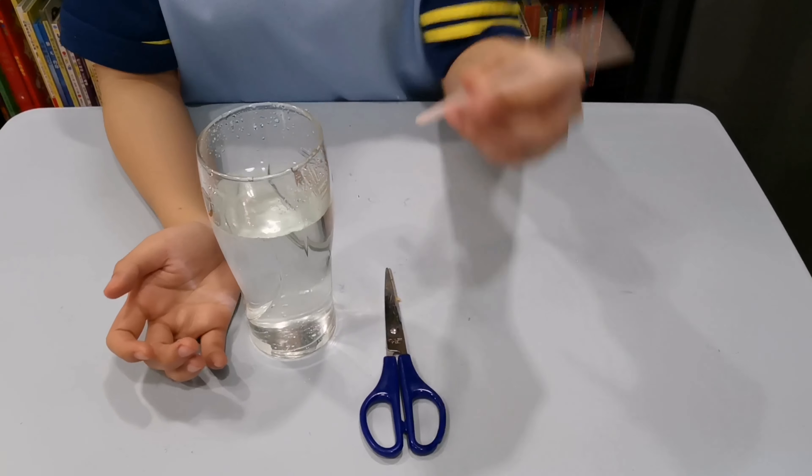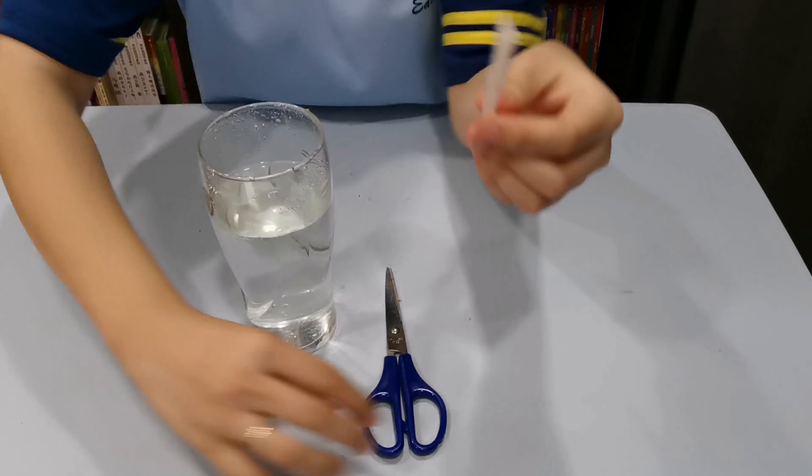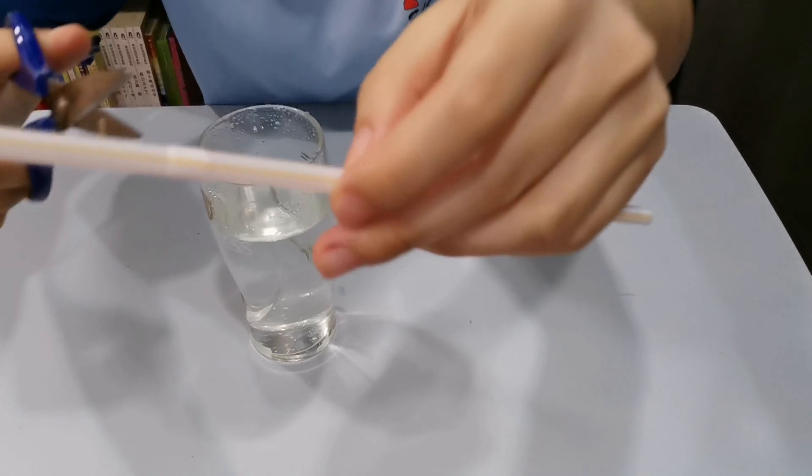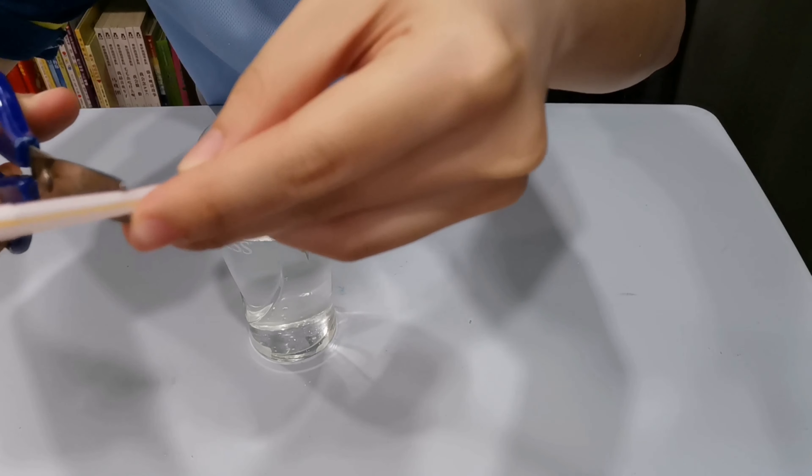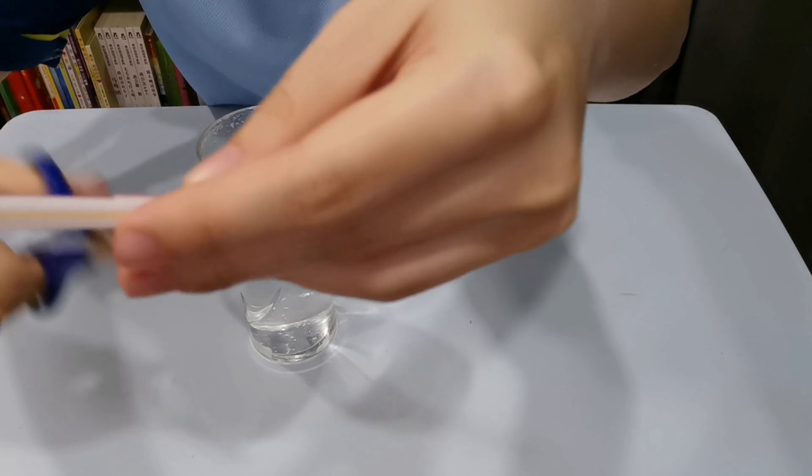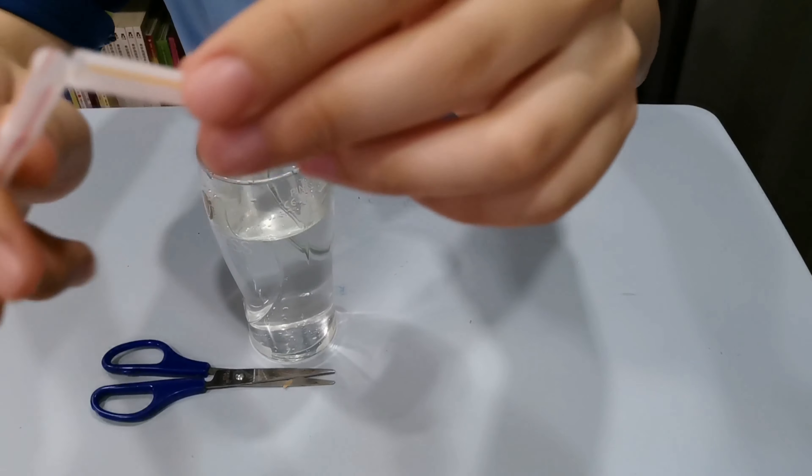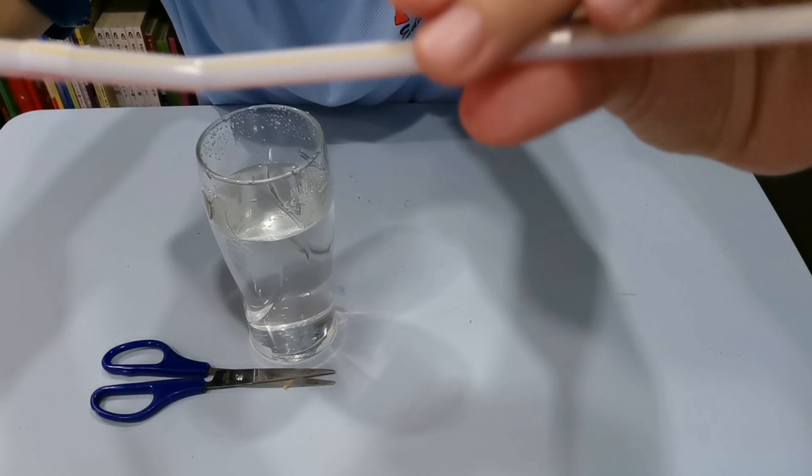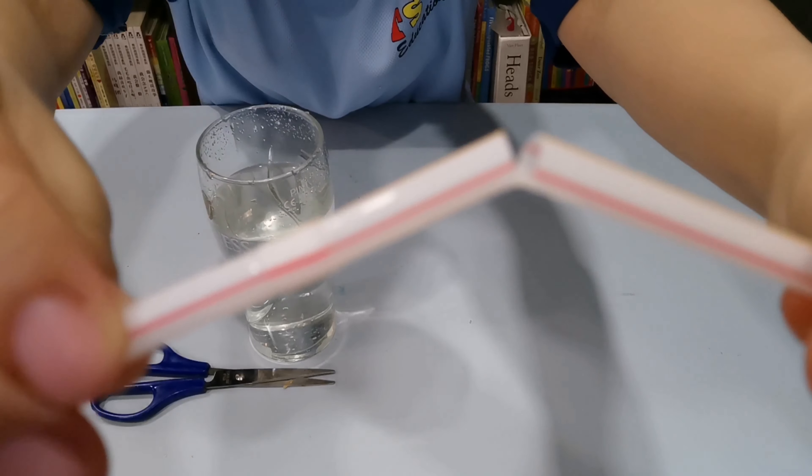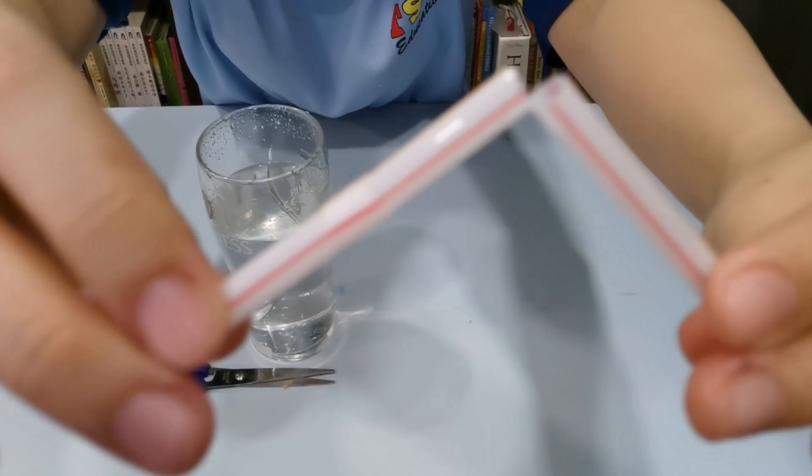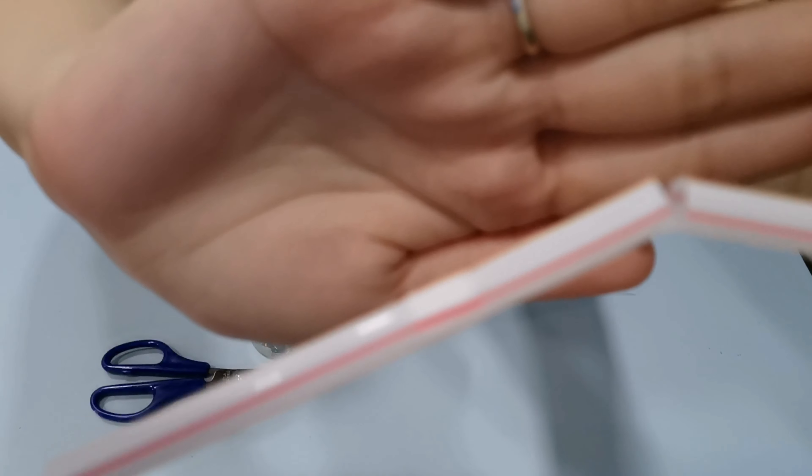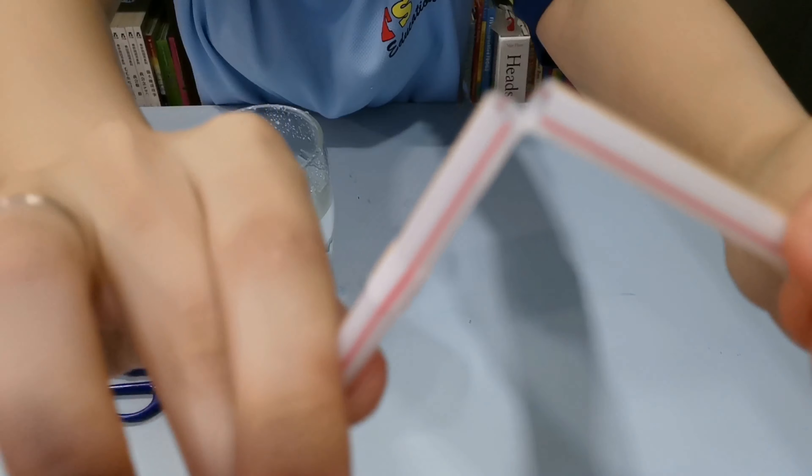And that is the materials we need, so let's start. First we take a straw and use a scissor to cut the middle of the straw. Children, remember don't cut your straw into two pieces, okay? You still need left a little bit of an edge.